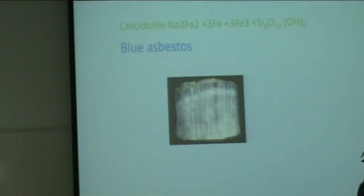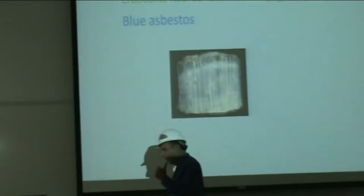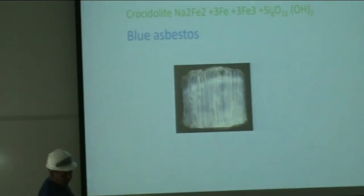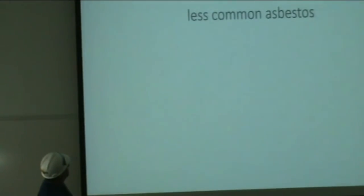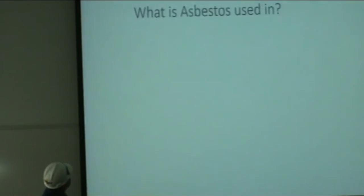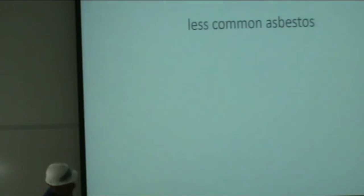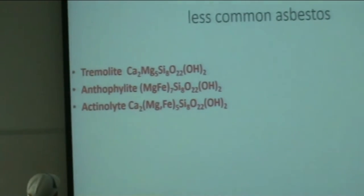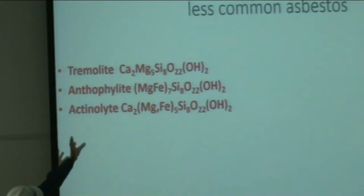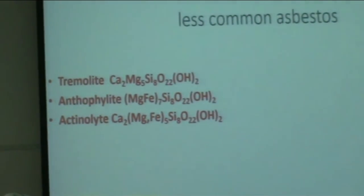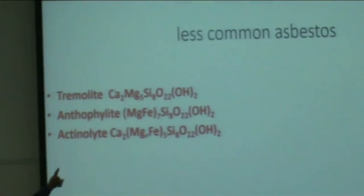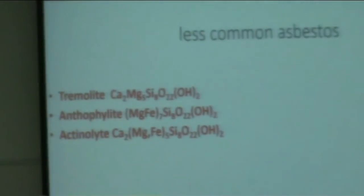Just look at the specimens — don't put your nose down there and try to breathe it in. The less common types of asbestos are tremolite, anthophyllite, and actinolite. These are calcium, magnesium, and iron in various combinations. There was a book written about tremolite, which I'll show you later near the end of the presentation.